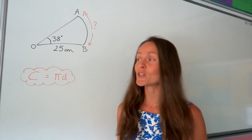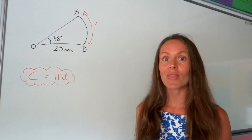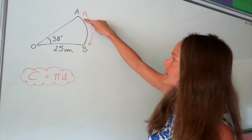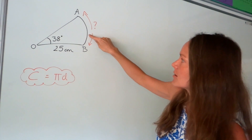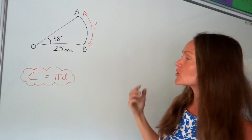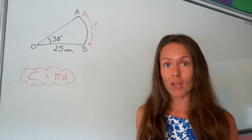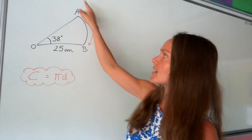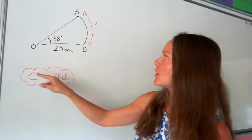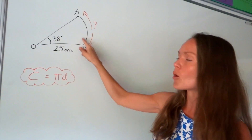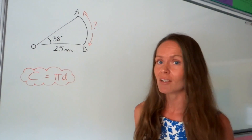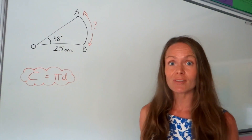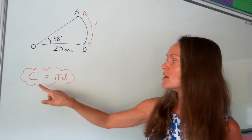In this next question we have to work out the length of arc AB, which is just this curved distance here. This is just part of the circumference — if you imagine this sector as a full circle, it's just a little section of what would be the circumference. So we need to use the arc length formula in this question.